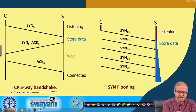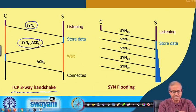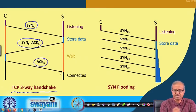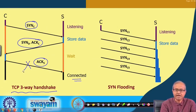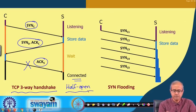This is the three-way handshake protocol in TCP. From client to server, first a SYN packet is sent. The server sends back a SYN-ACK packet with both flags set. The client finally sends back an ACK packet and the connection gets established. But if this third packet is not sent back, there will be a half-open connection.